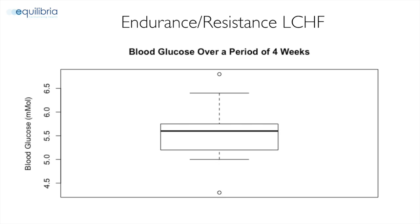The next box plot represents a reasonably high-end non-professional athlete who does both endurance and resistance training and is on a low-carbohydrate, high-fat diet. As you can see from this box plot, 5.6 is still the actual mean, and considering they are on a low-carbohydrate, high-fat diet, 5.6 in this specific context is considerably high. Normally I would want to see these figures between the low-4s and high-4s — anything above 5, I would personally want to investigate further.